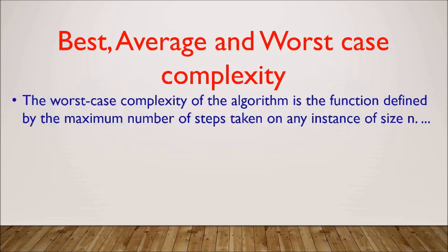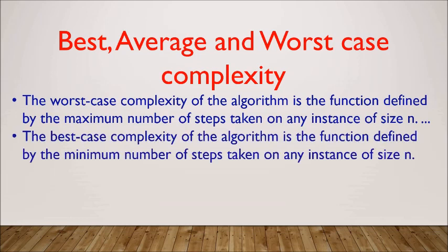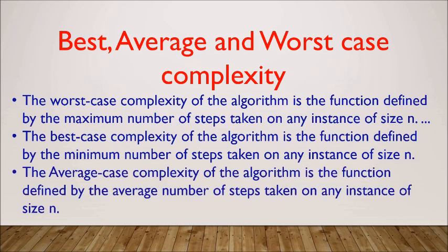The worst case complexity of any algorithm is the function defined by the maximum number of steps taken on an instance of size n. Less time is needed in best case, more time is needed in worst case. Best case is where the minimum number of steps is taken, meaning it will execute fast. Average case means the average number of steps are taken.